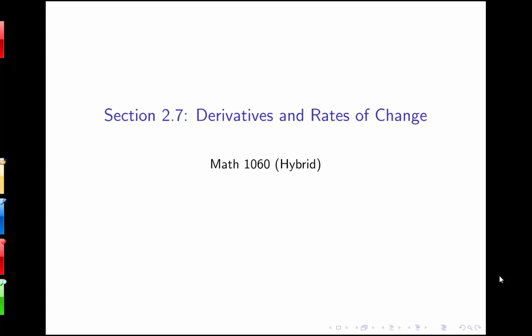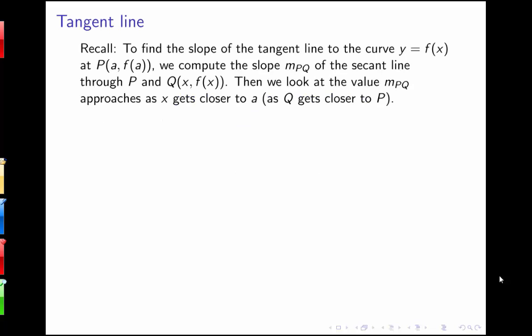In this lecture, I'm going to be talking about derivatives and rates of change. We want to start by recalling some of the ideas from section 2.1 — the problem of finding the slope of the tangent line to a curve y equals f of x at some point P. We said that we compute the slope of the tangent line by looking at the slope of the secant line through points P and Q.